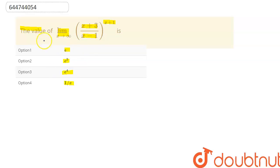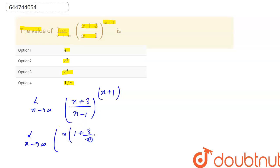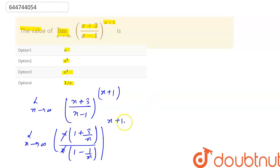So we have limit x tends to infinity of (x+3)/(x-1) to the power (x+1). If I take x common from numerator and denominator, it will be limit x tends to infinity of x(1 + 3/x) upon x(1 - 1/x) to the power (x+1). The x's cancel out, and we know that 1/∞ = 0, so putting x = ∞ gives 0 in both terms.